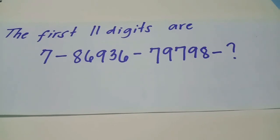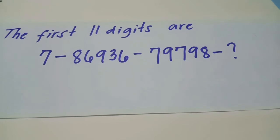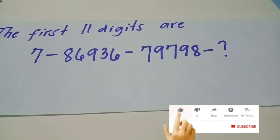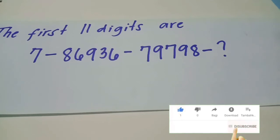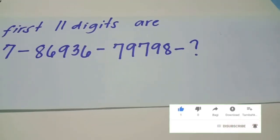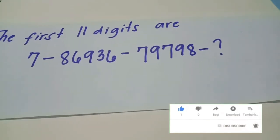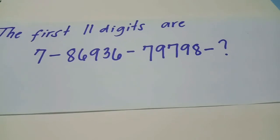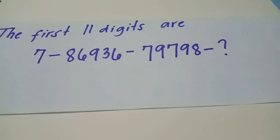So to make it easier to understand, we have here an example. The first 11 digits are 7, 8, 6, 9, 3, 6, 7, 9, 7, 9, 8, and blank. So we'll verify or identify what the check digit is, given these 11 digits.